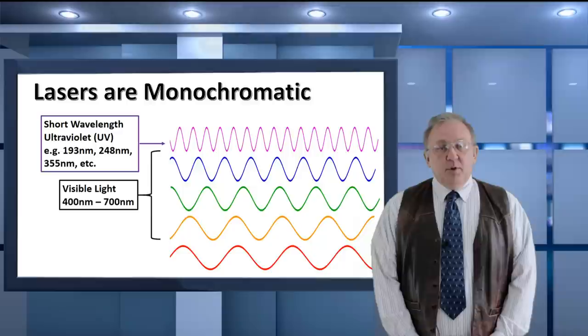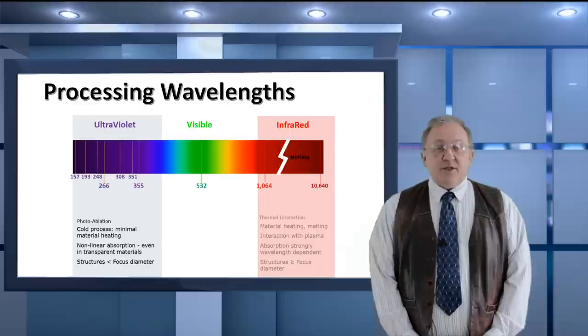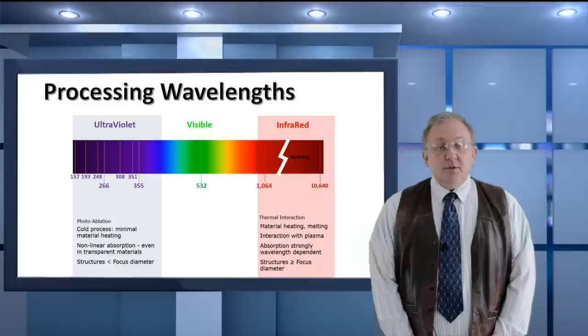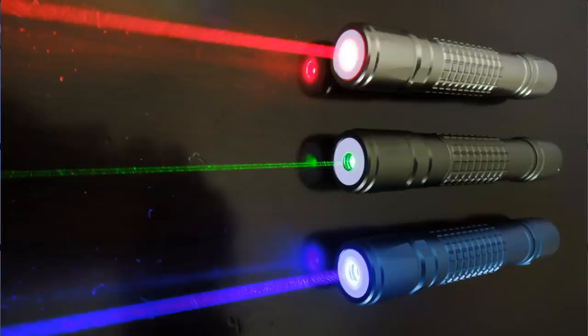Depending on the laser type, they can have wavelengths from the ultraviolet through the visible or even in the infrared portion of the electromagnetic spectrum. Wavelength selection is important depending on the material being laser processed. As an example, UV lasers are usually best for drilling and cutting plastics.